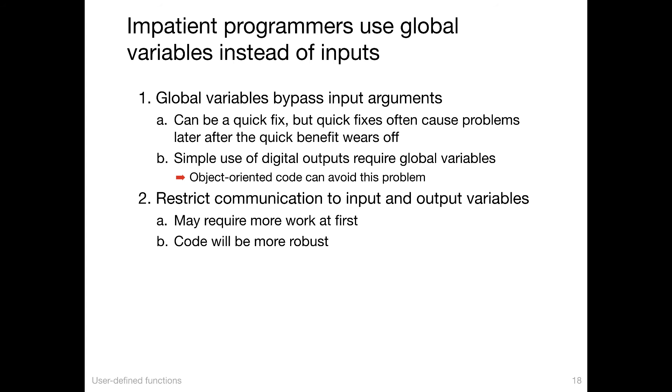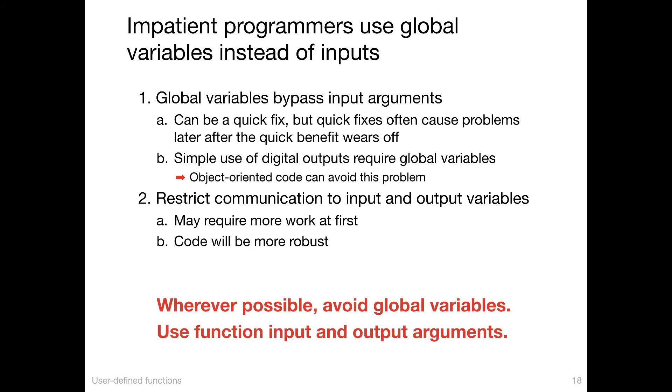In general, however, we want to restrict communication to input and output variables. That may require some thinking, but it's always a good outcome. Code will ultimately be more robust when you do that. So whenever possible, wherever possible, avoid global variables. Use function input and output arguments instead.